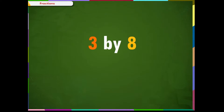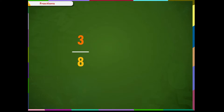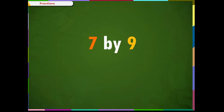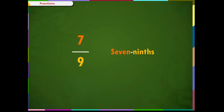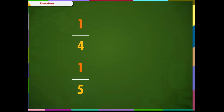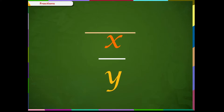The fraction three by eight is numerically written as 3/8 and in words as three eighths. Similarly, seven by nine is numerically written as 7/9 and in words as seven ninths. Remember, if the fraction is one by four or one by five, then in words these are written as one-fourth and one-fifth — there is no 's' at the end. Thus, a fraction is written in the form of x by y, where x and y are natural numbers.